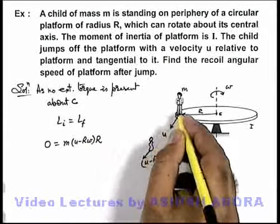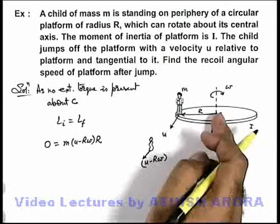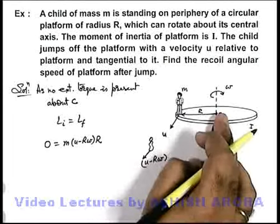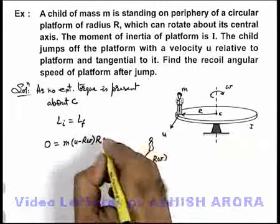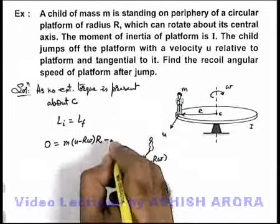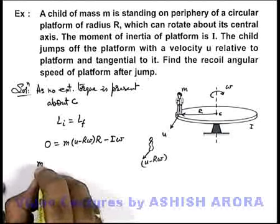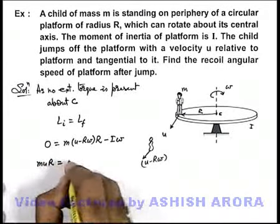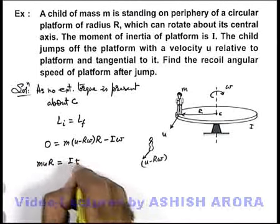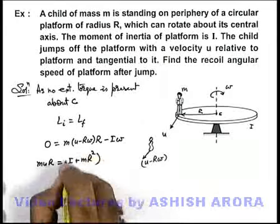The platform rotates in the opposite direction, contributing minus I omega. On simplifying, m u R equals (I plus m R squared) omega.